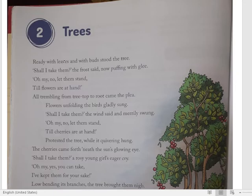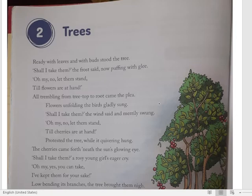The poem begins: 'Ready with leaves and with buds stood the tree.' Buds ka matlab kya hota hai? Buds means flower buds — kaliyan. This poem is set in the context of buds blooming. 'From blossom to bloom' — the poem describes a tree full of buds ready to flower. Then: 'Shall I take them, the frost said, now puffing with glee.' So this poem is set in the winter season.